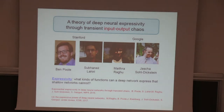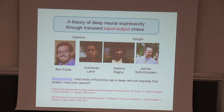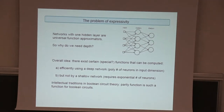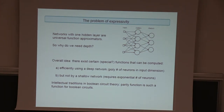The expressivity work was done with a talented group of students and postdocs. The question is: why depth? There's a famous theorem that any network with one hidden layer can compute any function. But what these theorems don't tell you is how many hidden neurons you need — it could be quite large. The basic idea is that certain special functions can be computed efficiently by a deep network using a polynomial number of neurons, but not by a shallow network unless it has an exponential number of neurons.